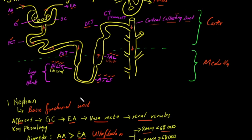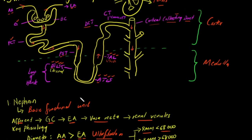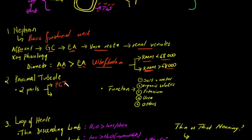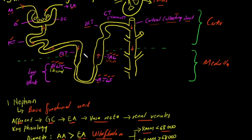Moving on to the proximal tubule. The proximal tubule has two parts: the proximal convoluted tubule — the tortuous area, also known as pars convoluta — and the proximal straight tubule, also known as pars recta. It is important to know the function of each structure to understand the physiology.